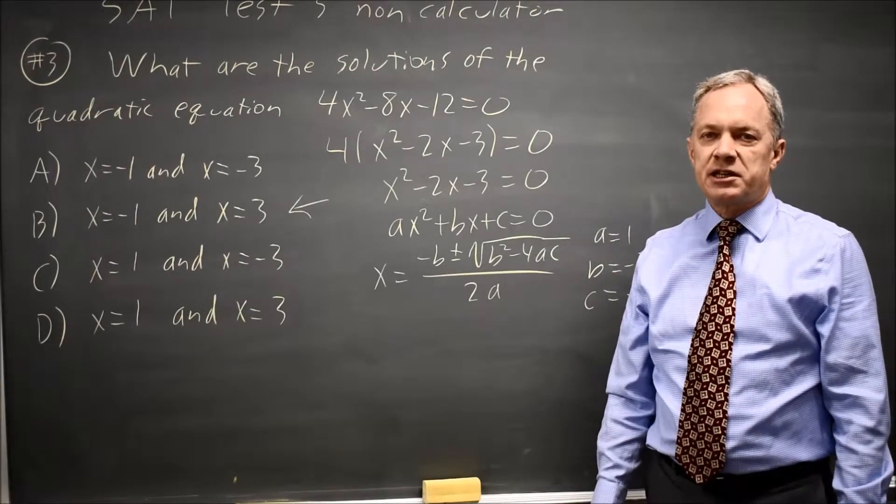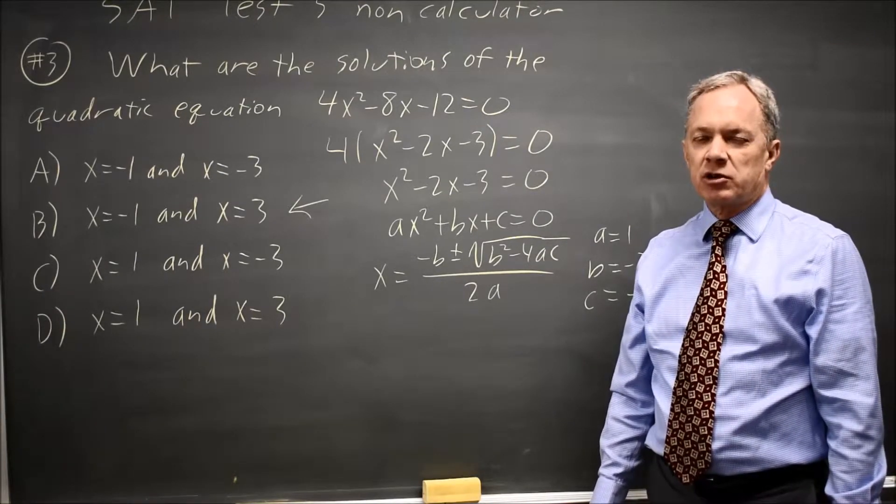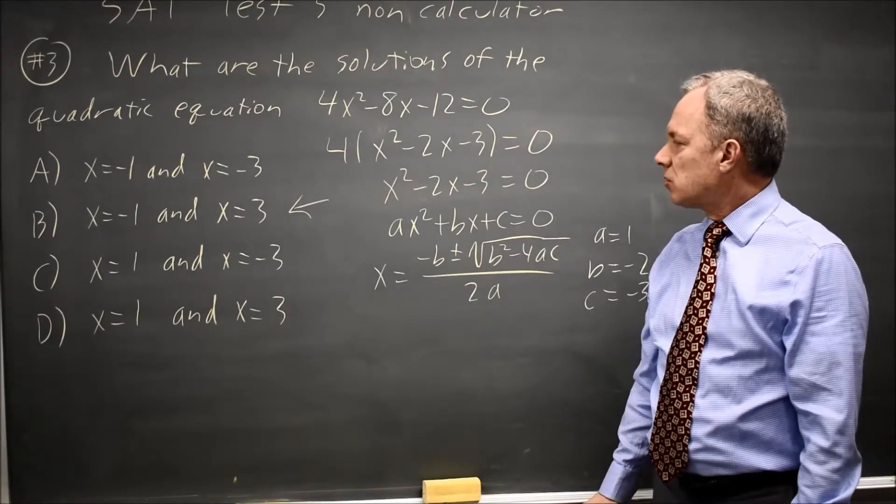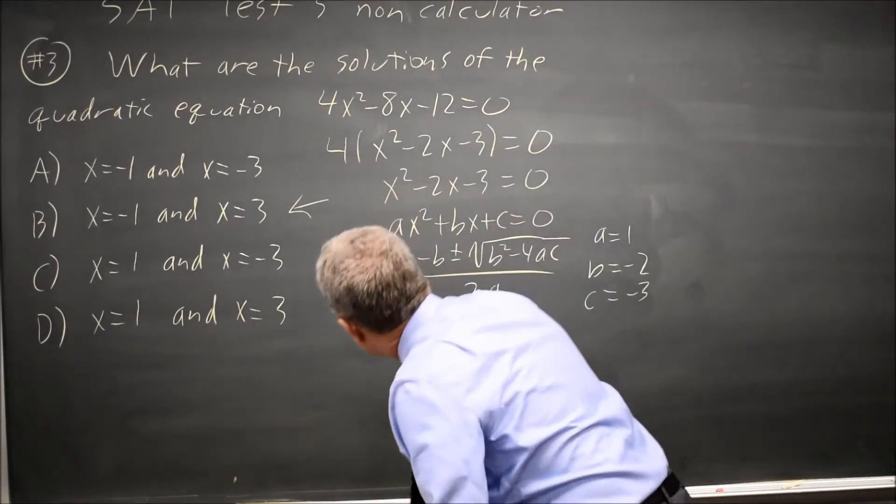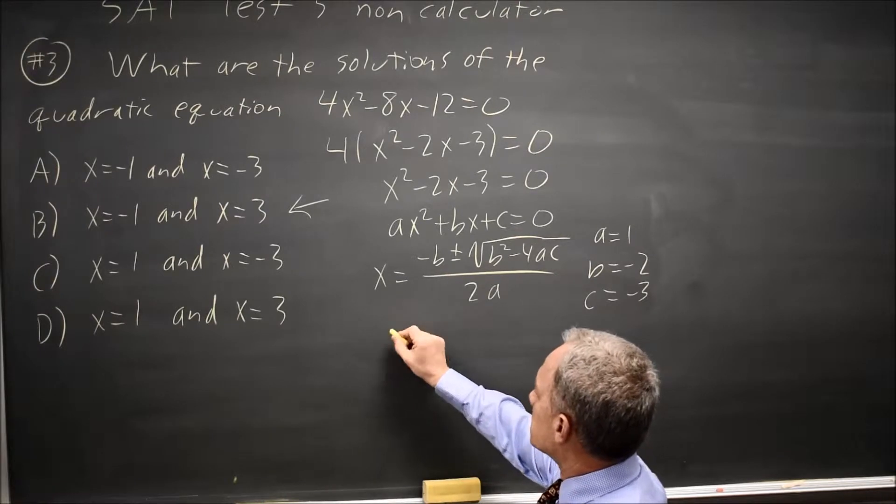I always write these down to avoid either substituting them into the wrong value or, more frequently, dropping a negative. And we're all good at dropping negatives, so finding a way to avoid that error is a good thing.